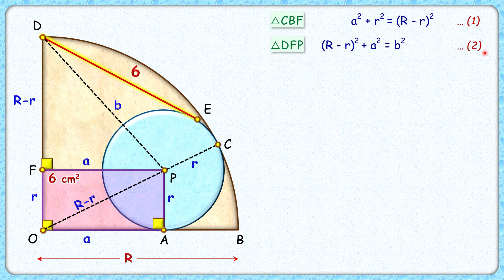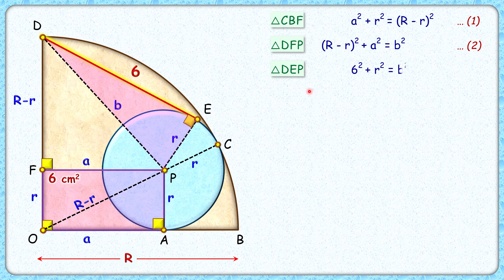For our third equation, let's join PE — that's radius r. We know that the radius is perpendicular to the tangent, so this angle is 90 degrees. In this right angle triangle, applying Pythagoras theorem, we get our third equation: 6² + r² = b². That's our third observation.